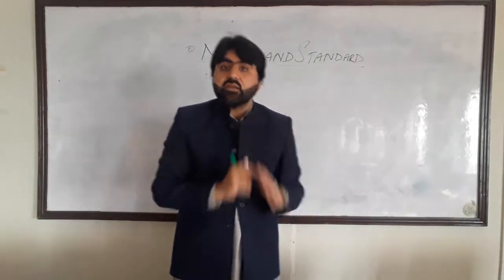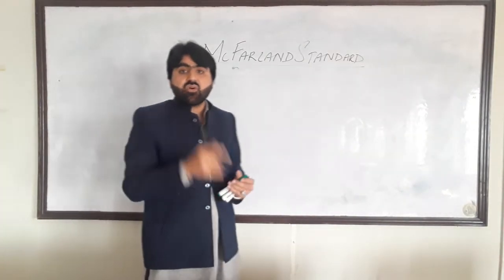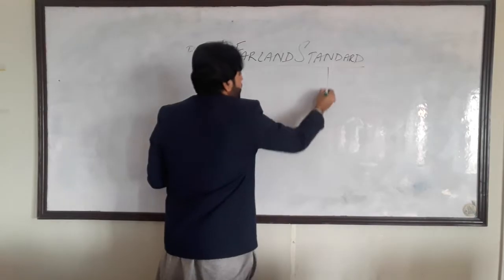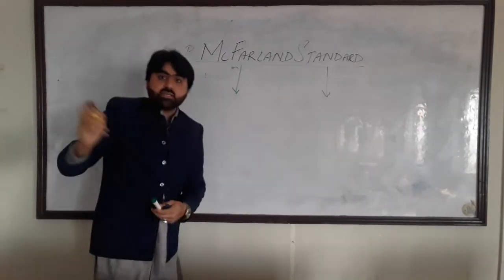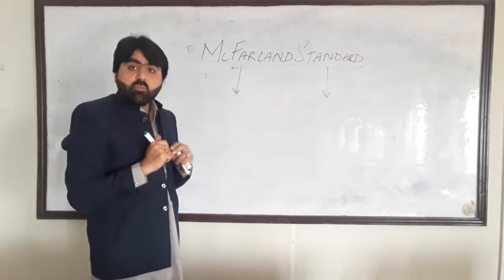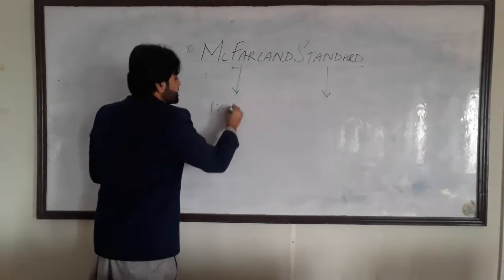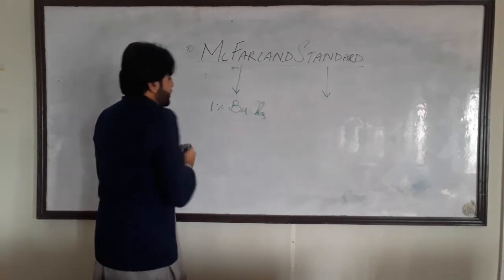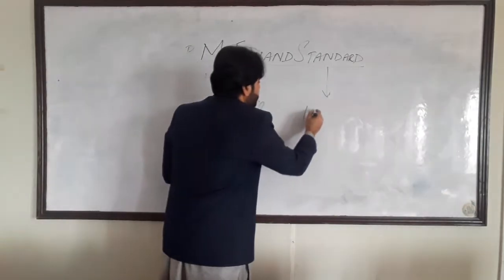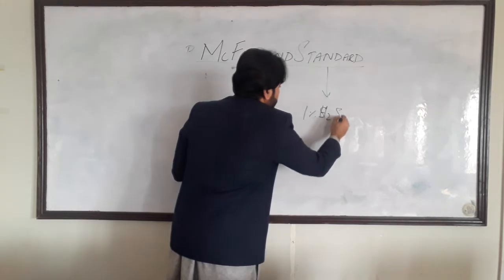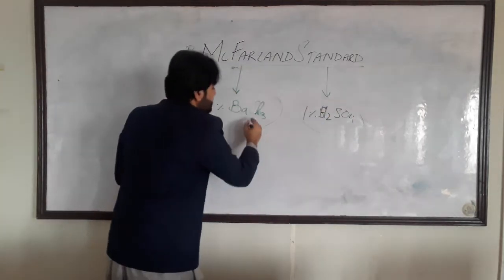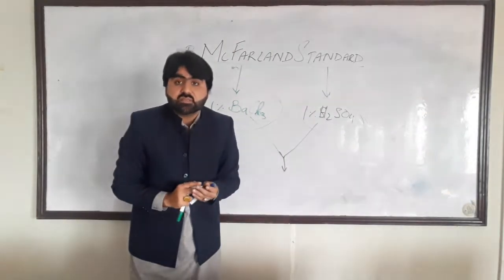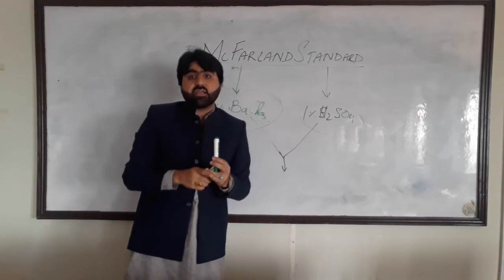We calibrate it against the known standard, which is the McFarland standard. The McFarland standard is made up of two solutions: number one, a one percent solution of barium chloride (BaCl₂), and number two, a one percent solution of sulfuric acid (H₂SO₄). These two solutions are combined in order to produce the McFarland standard, also known as the turbidity standard.